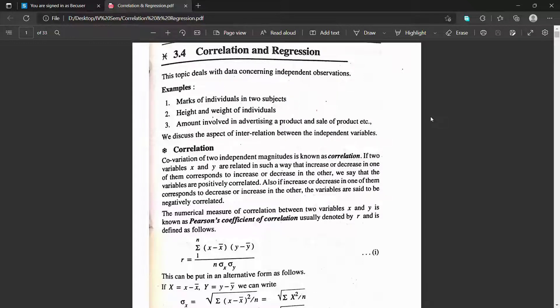Covariation of two independent magnitude is known as correlation. If two variables x and y are related in such a way that increase or decrease in one of them corresponds to increase or decrease in other, we say that the variables are positively correlated.